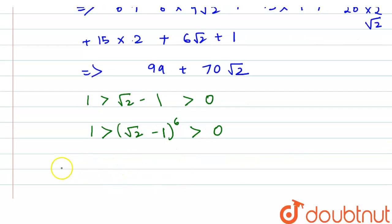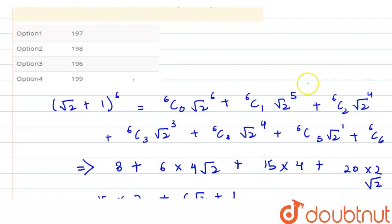So we will write it as a' = (√2 - 1)^6 and consider this as a.